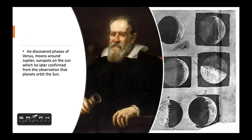He confirmed from his observations that planets orbit the sun. Galileo was not the first person to invent the telescope, but Galileo was the first person who, when he got to know about something known as a spyglass, looked through the telescope and observed the sky.